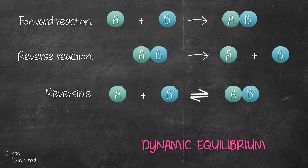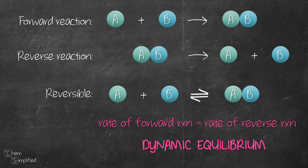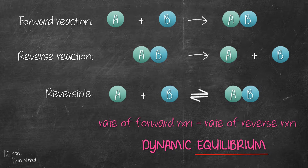When A and B combine to form the AB complex at the same rate as the complex splitting up to give back A and B, the system is said to be in equilibrium. Since the system is constantly moving — A and B are constantly forming AB while AB is constantly breaking down to A and B — that makes the system dynamic. That's what it means by a system in dynamic equilibrium.